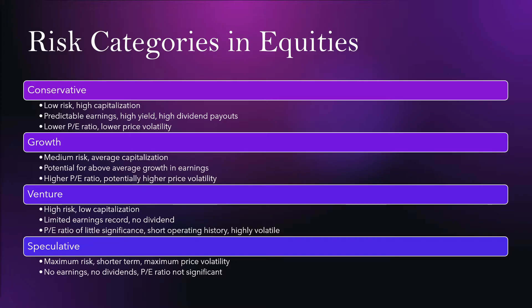The riskiest type of equity is speculative equities. These have maximum risk, a shorter term, and maximum price volatility — meaning there is potential for the stock to even go bankrupt. Speculative companies tend to have no earnings and no dividends, and the price-to-earnings ratio is not significant whatsoever.